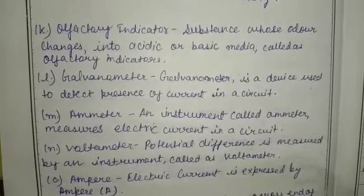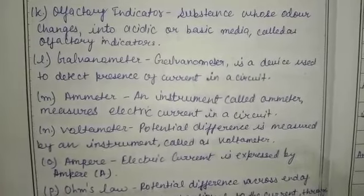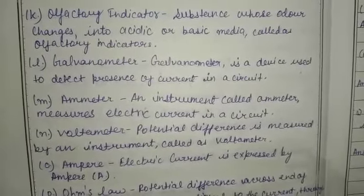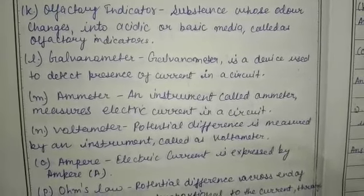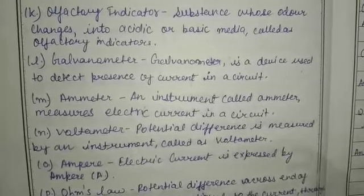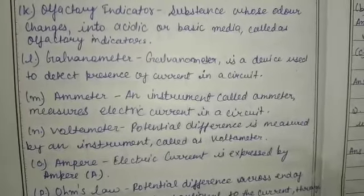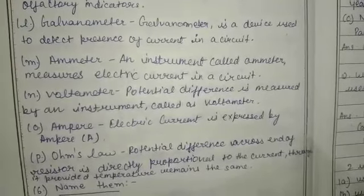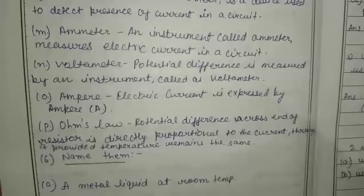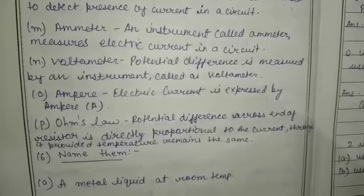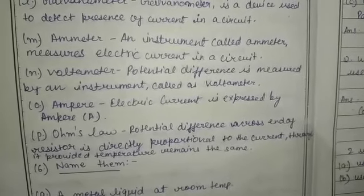Galvanometer and ammeter and voltmeter differentiation is very important and has come up many times. A galvanometer is a device used to detect the presence of current in a circuit, whereas an ammeter is an instrument used to measure electric current in a circuit. A voltmeter is an instrument used to measure potential difference. Electric current is expressed in ampere (A). Ohm's law: the potential difference across the ends of a resistor is directly proportional to the current through it, provided the temperature remains the same. Ohm's law was discovered by George Simon Ohm.